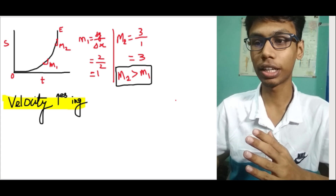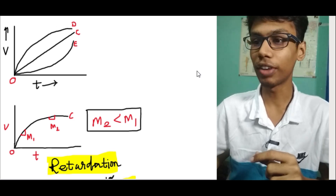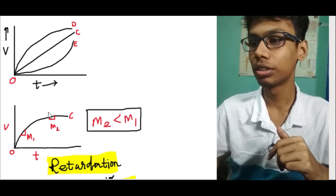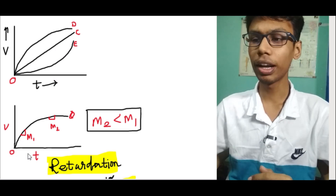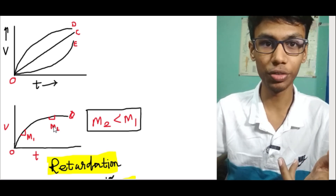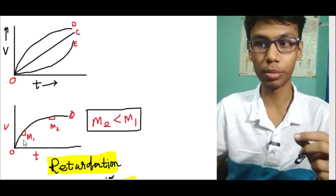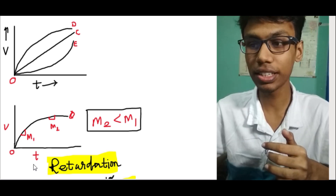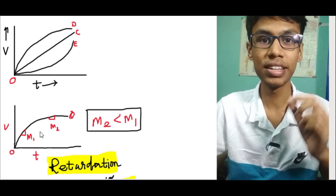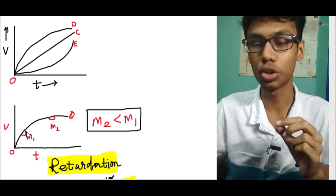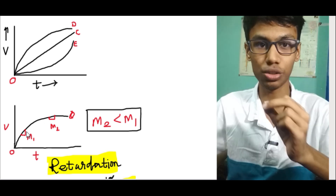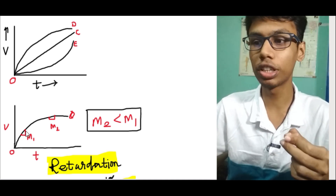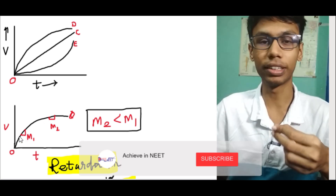Now we look at the velocity-time graph. In a velocity-time graph, what is the slope? The slope is acceleration. The formula is velocity divided by time taken — so in the vertical line we have velocity, in the horizontal line we have time, and slope equals y-axis divided by x-axis, which is velocity divided by time — that is acceleration.